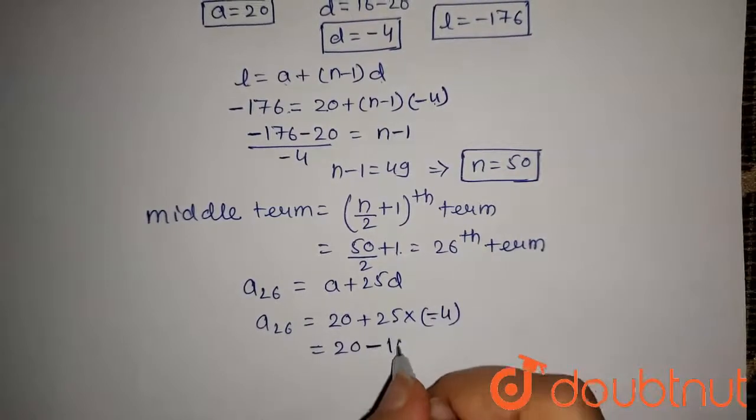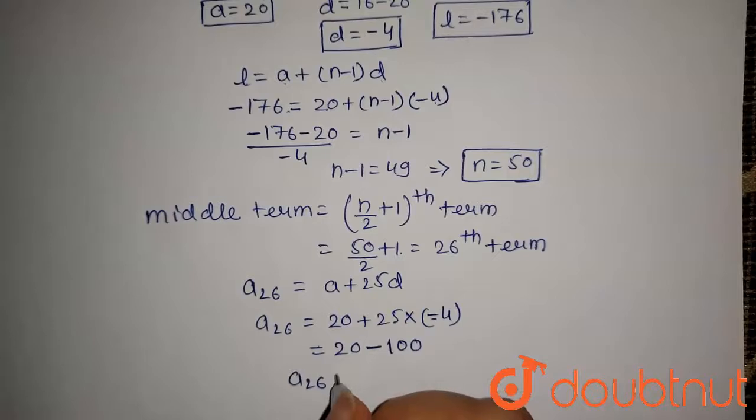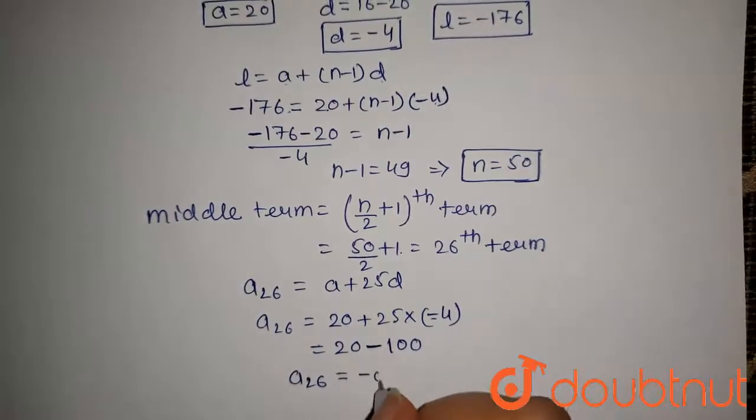And there is a minus sign so it will be -100, and this will give the 26th term, that is the middle term, is -80.